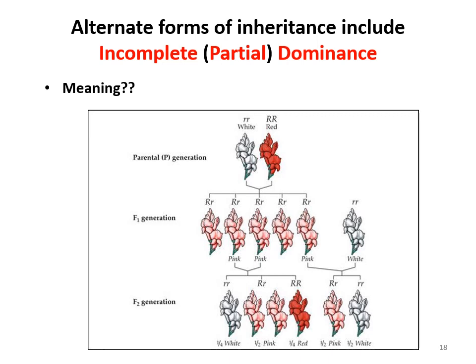Red and blue flowers making purple — getting a third new color — that's incomplete or partial dominance. Take note that the F2 generation of incomplete dominance has the genotype ratio equal to the phenotype ratio. In regular monohybrid crosses, we saw a 3:1 phenotype ratio and a 1:2:1 genotype ratio — they were different. In incomplete dominance, each genotype produces its own particular color, so both the genotype and phenotypic ratio are 1:2:1.